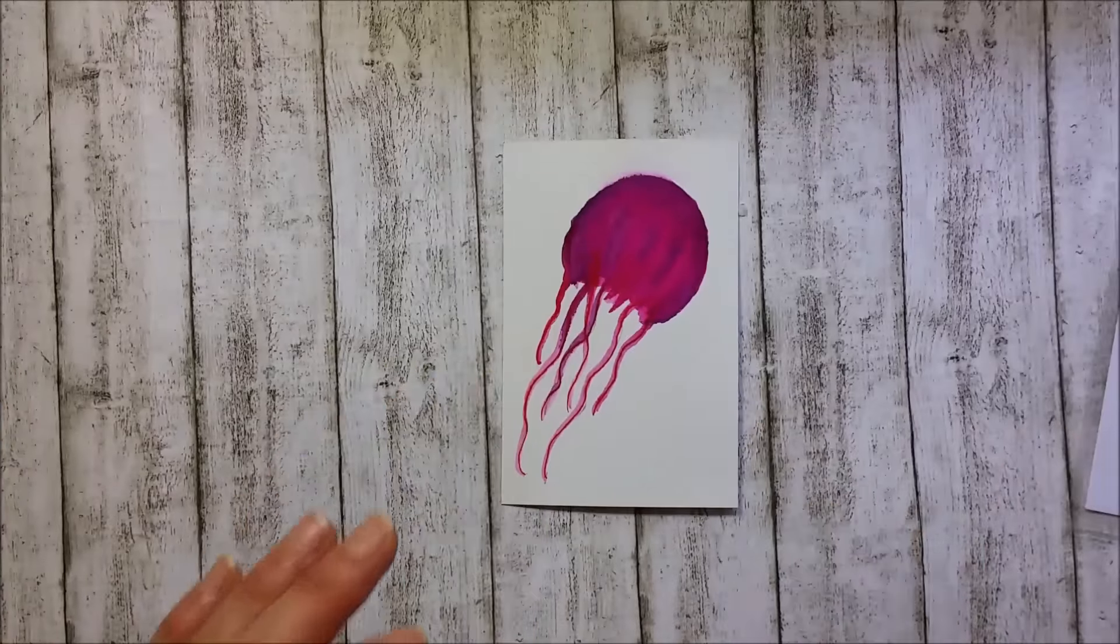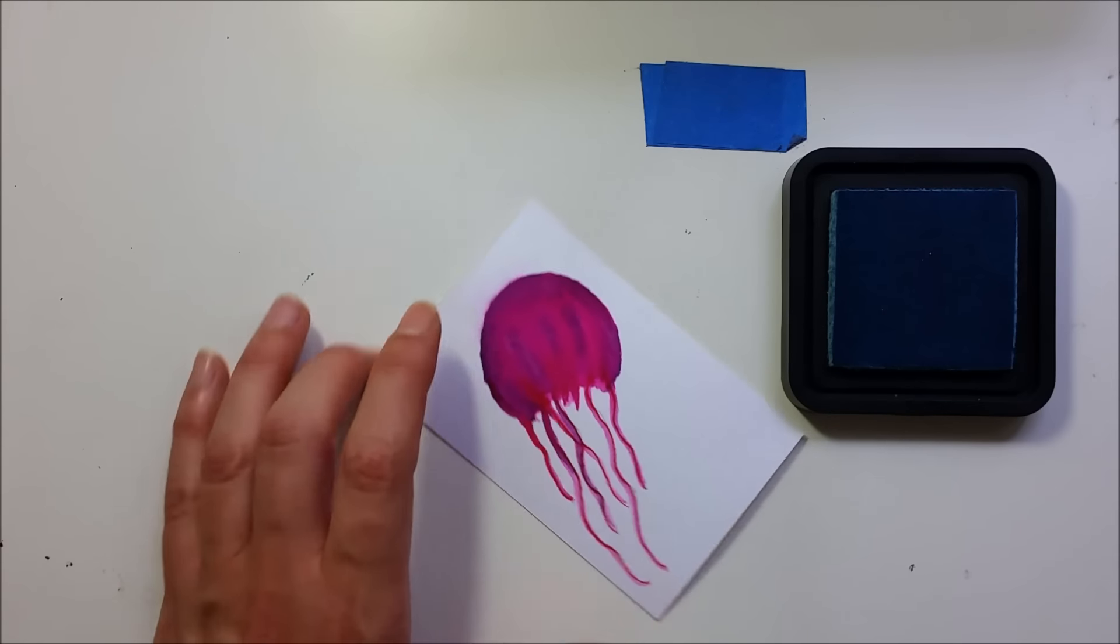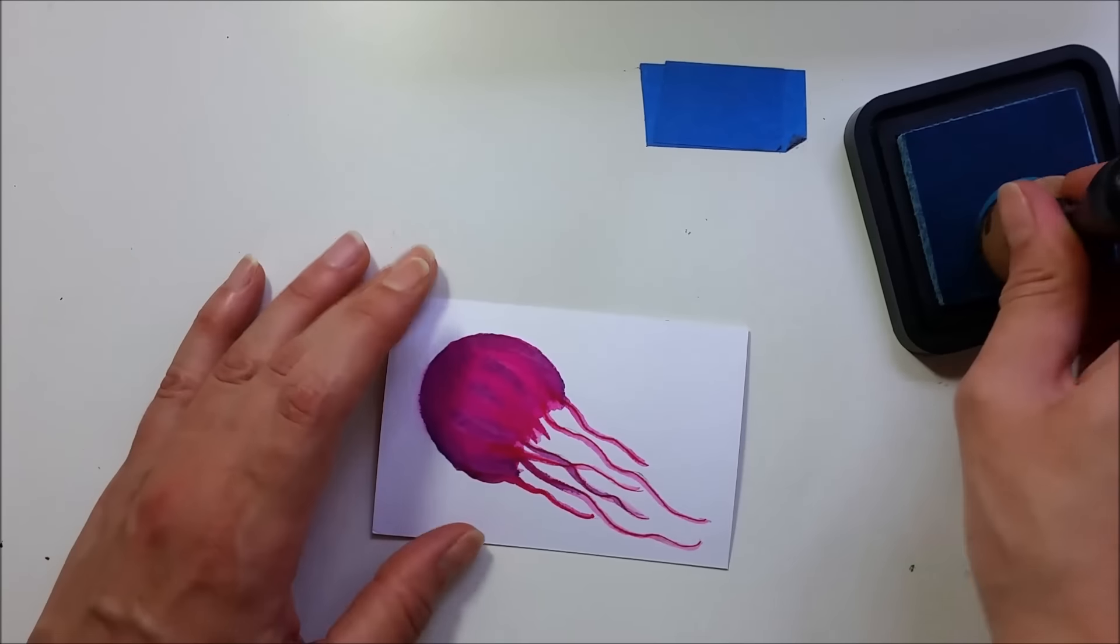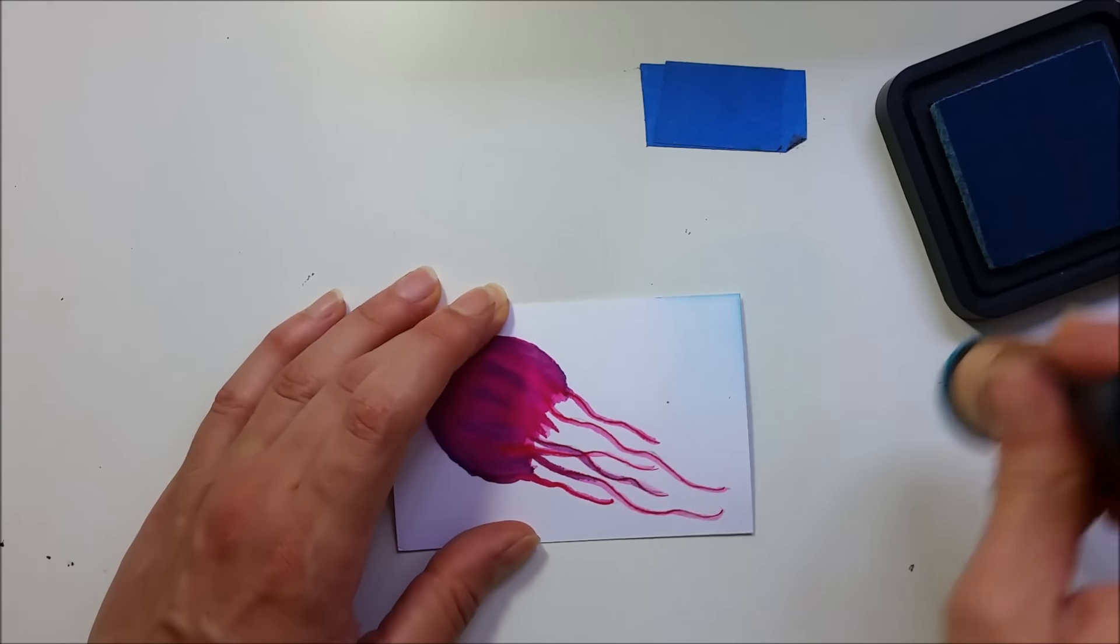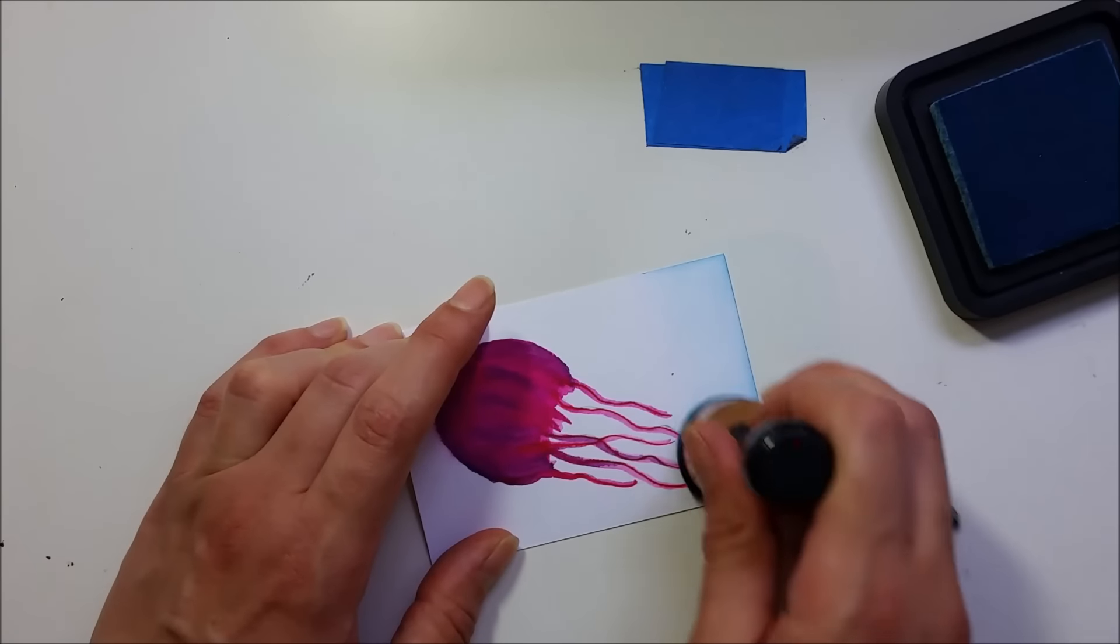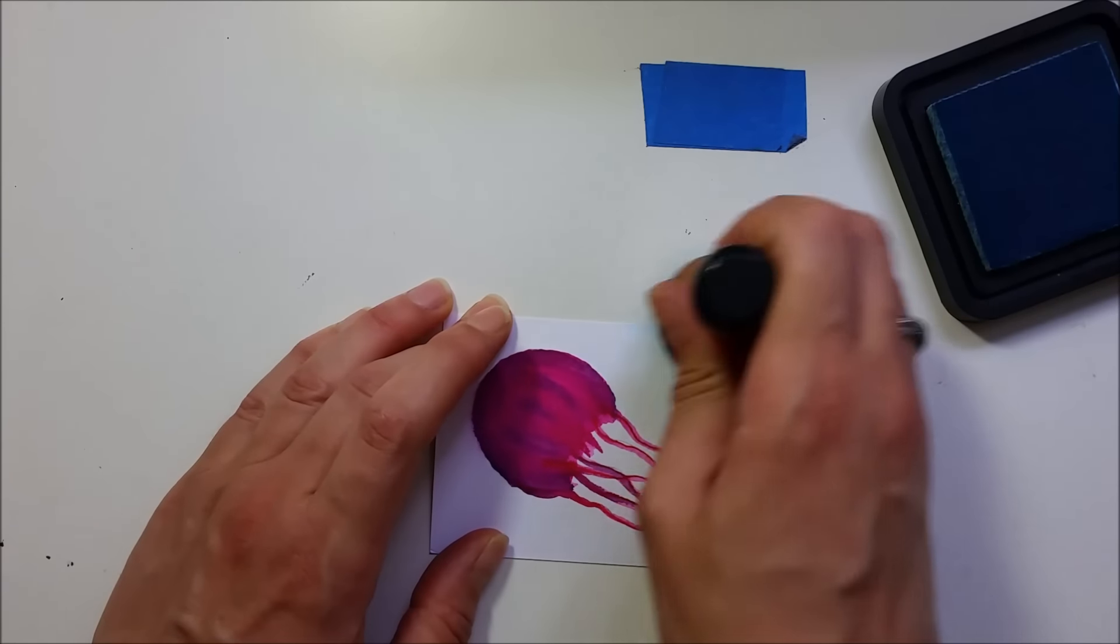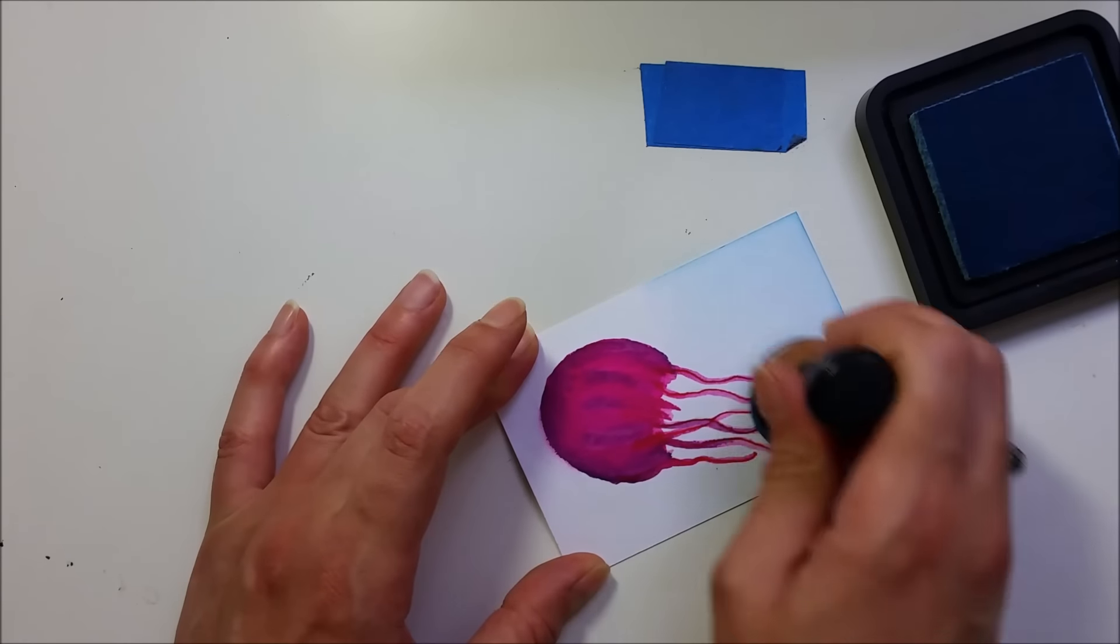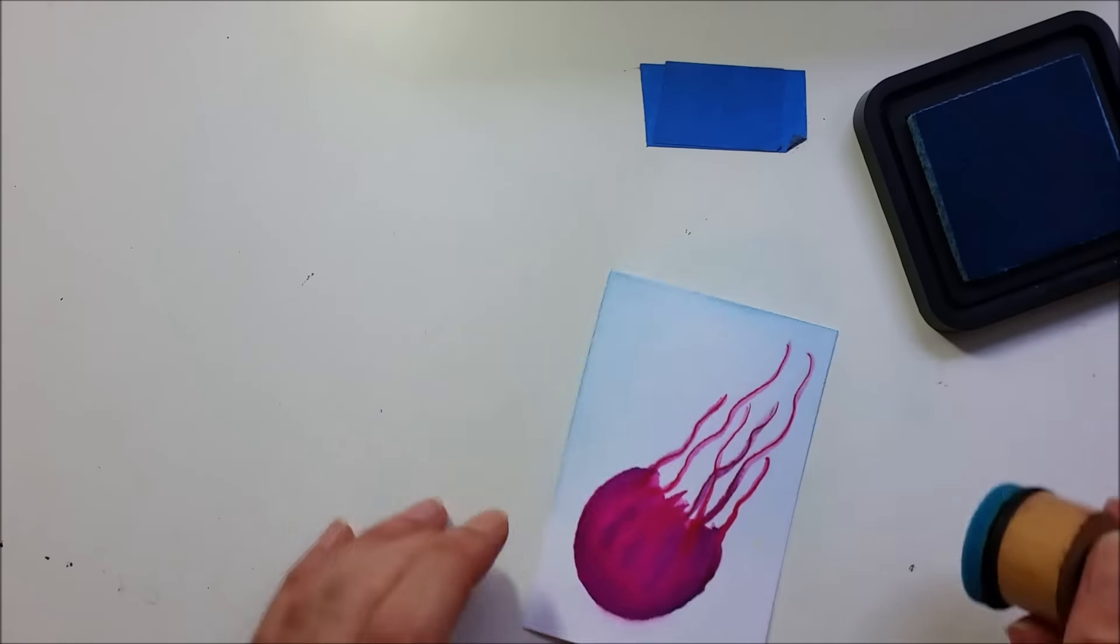In my background I'll be doing some sponging. I have here this tumbled glass. I'm gonna pick this up with a foam blending tool. I'm just gonna go all over the image. I don't stress too much if the colors will be mixing a bit. It's not gonna show too much.